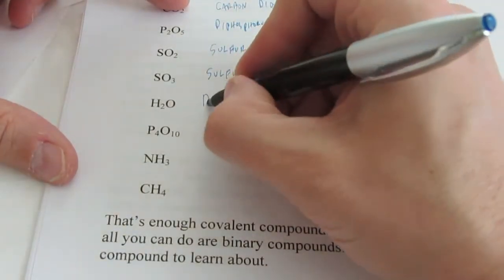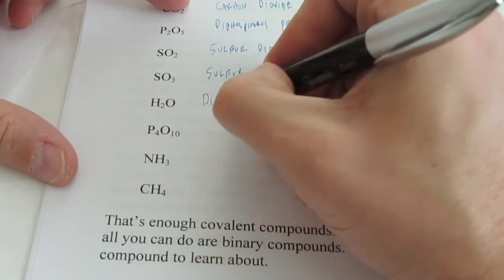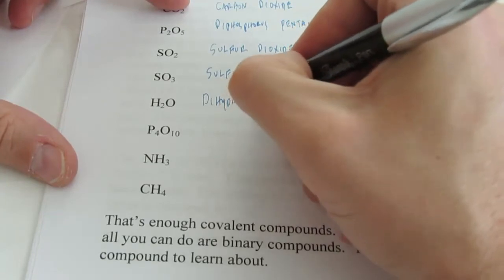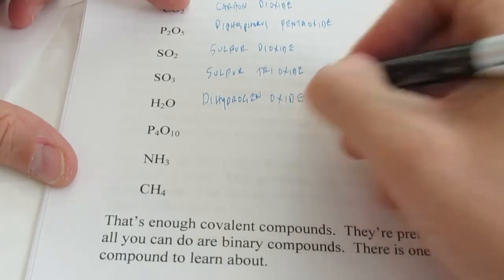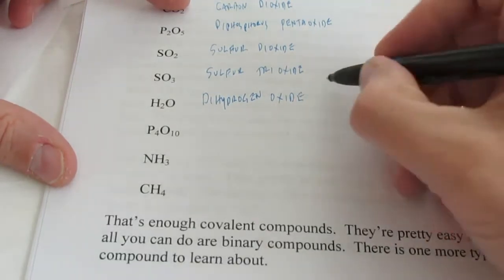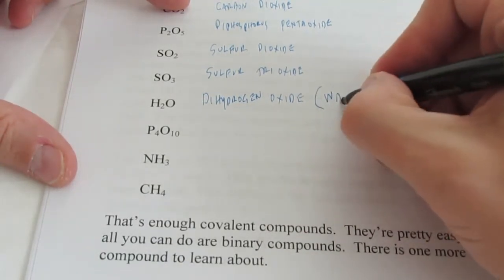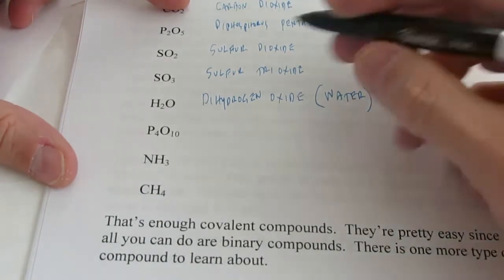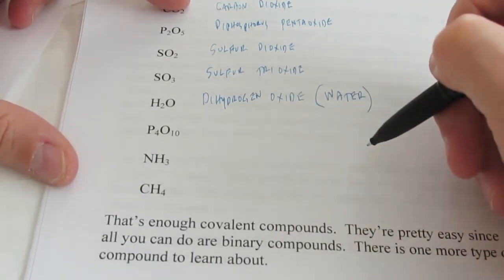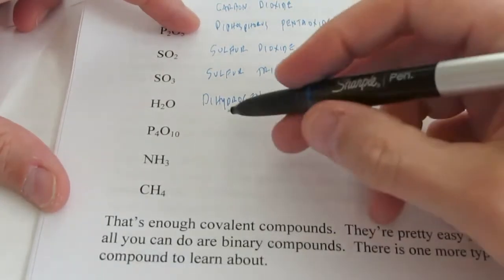H2O. This would be dihydrogen. Remember we don't change the ending of the first element's name. But the second element, we're always going to end in -ide. Dihydrogen oxide or monoxide. Now, for some of these, we will always use their common name. And I hope you guys call that water. Not dihydrogen oxide or dihydrogen monoxide.